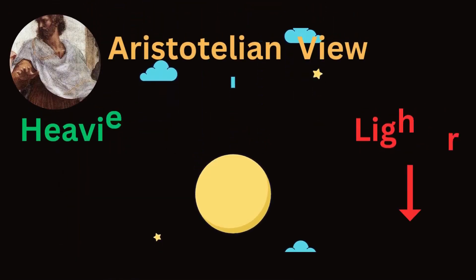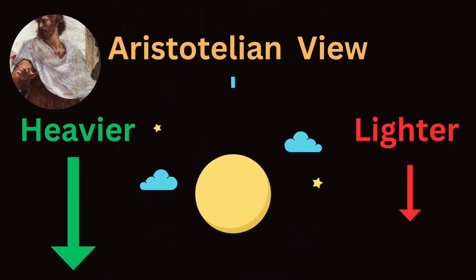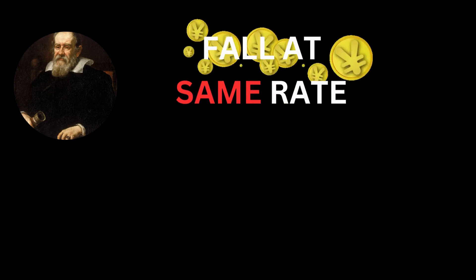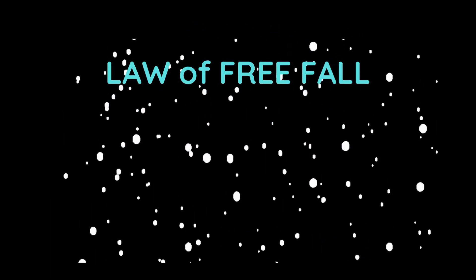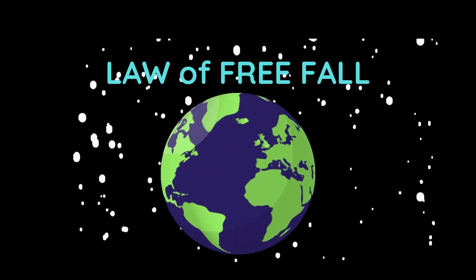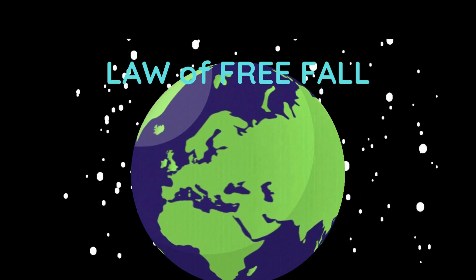Through his experiments and observations, Galileo challenged the Aristotelian view that heavier objects fell faster than lighter objects. Instead, he showed that objects of different masses fall at the same rate in a vacuum, provided air resistance was negligible. This discovery led to the development of the law of free fall, which states that all objects near the Earth's surface fall with the same acceleration due to gravity.